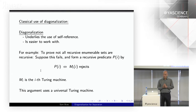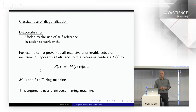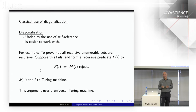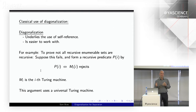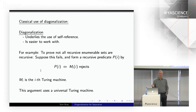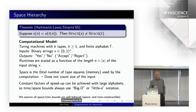For a classical use of diagonalization: to show not all recursively enumerable sets are recursive, assume for contradiction they all are. Then you can form a recursive predicate p which accepts input i if and only if the ith Turing machine M_i does not accept — it rejects input i. You can show p would be recursive if all RE sets are recursive, but it differs from the ith machine on the ith input. This argument uses a universal Turing machine that can evaluate the ith Turing machine — that's an important ingredient. This is exactly the template used for the space hierarchy.